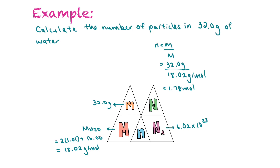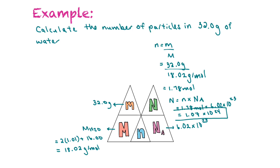Now, to take that the next step, we want to know how many particles. The number of particles is equal to the moles times Avogadro's constant — so that's 1.78 moles times 6.02 times 10 to the power of 23 particles per mole. That equals 1.07 times 10 to the power of 24 particles. That is the number of particles in 32 grams of water.